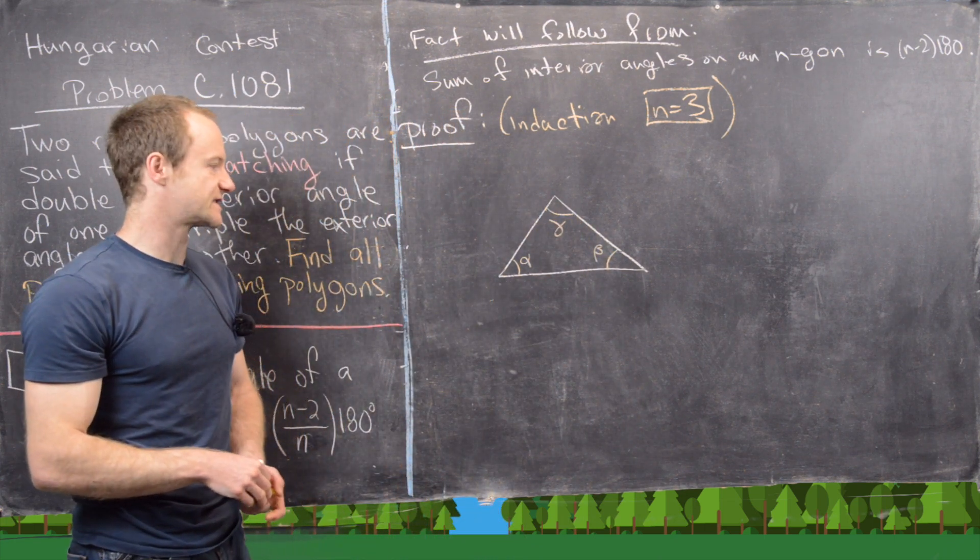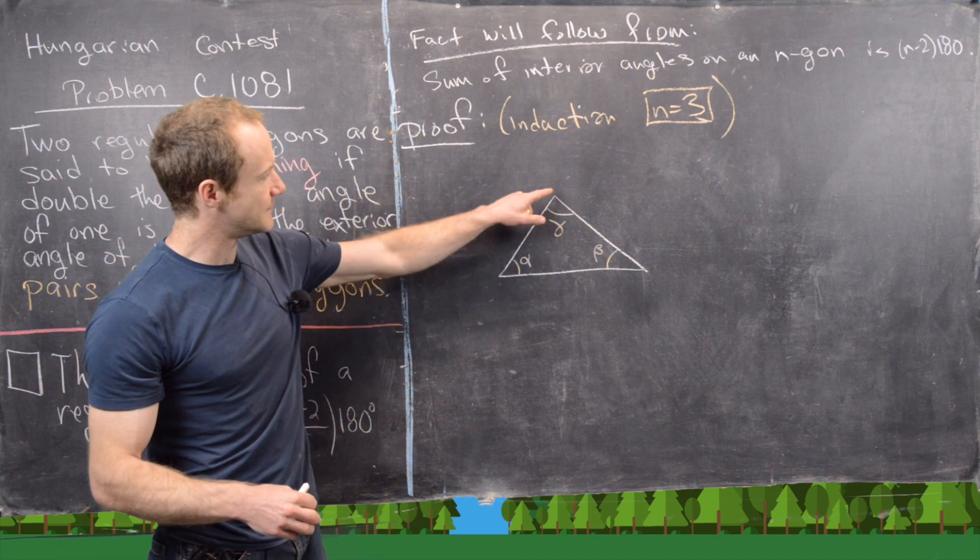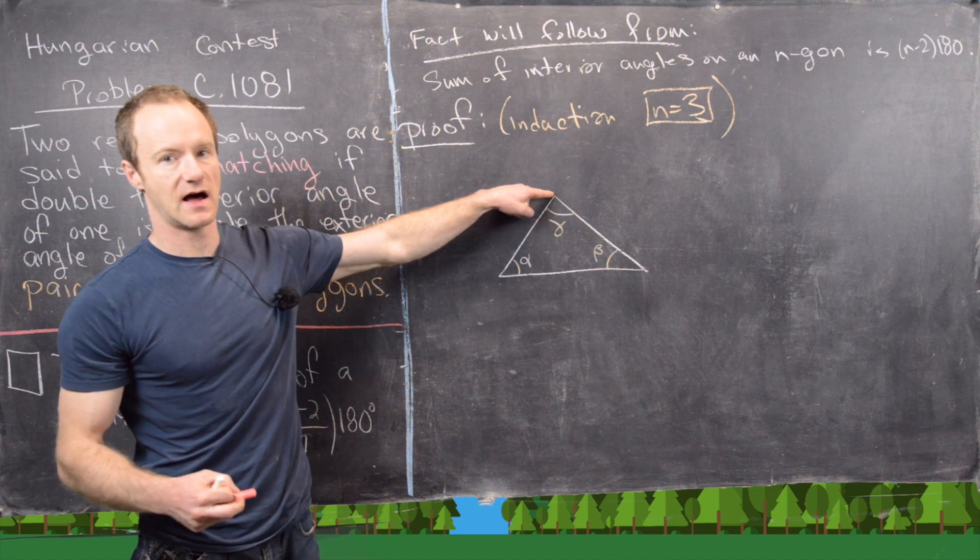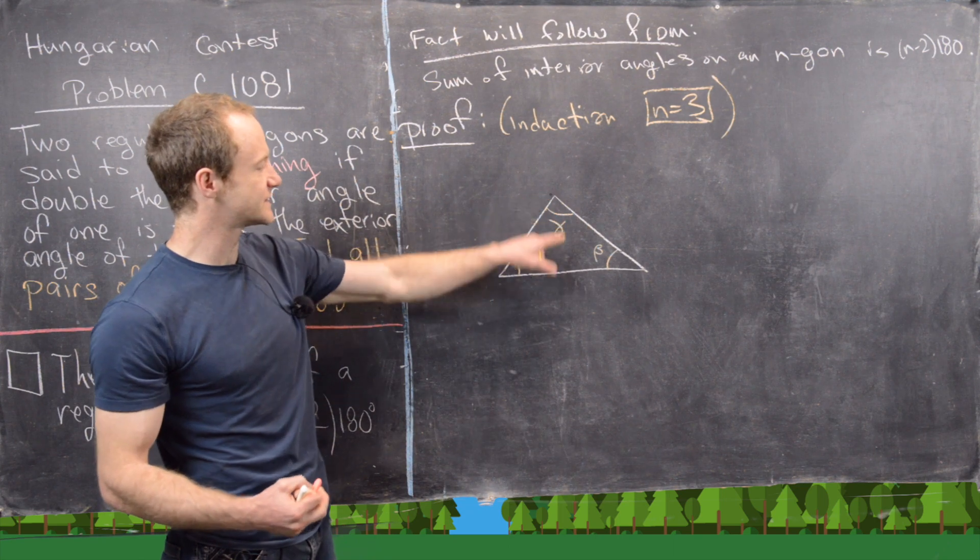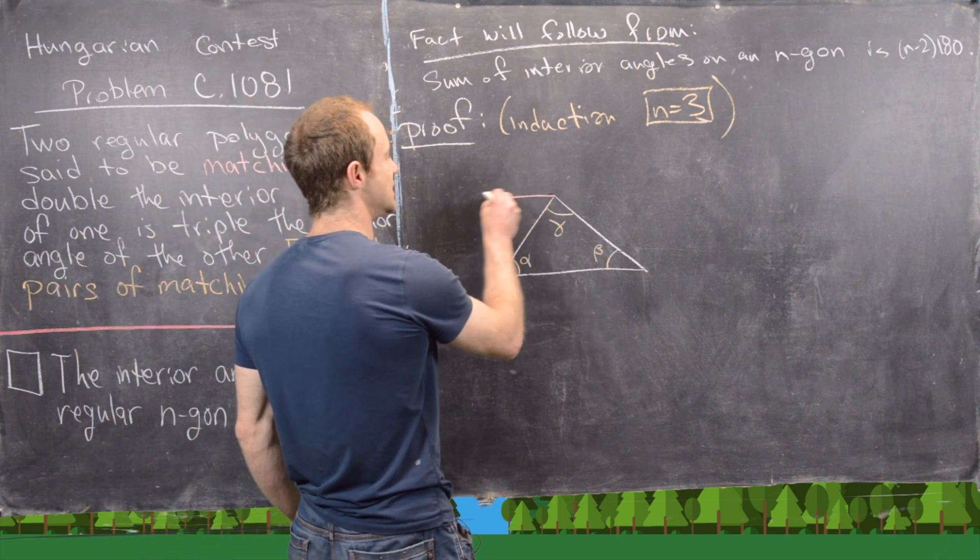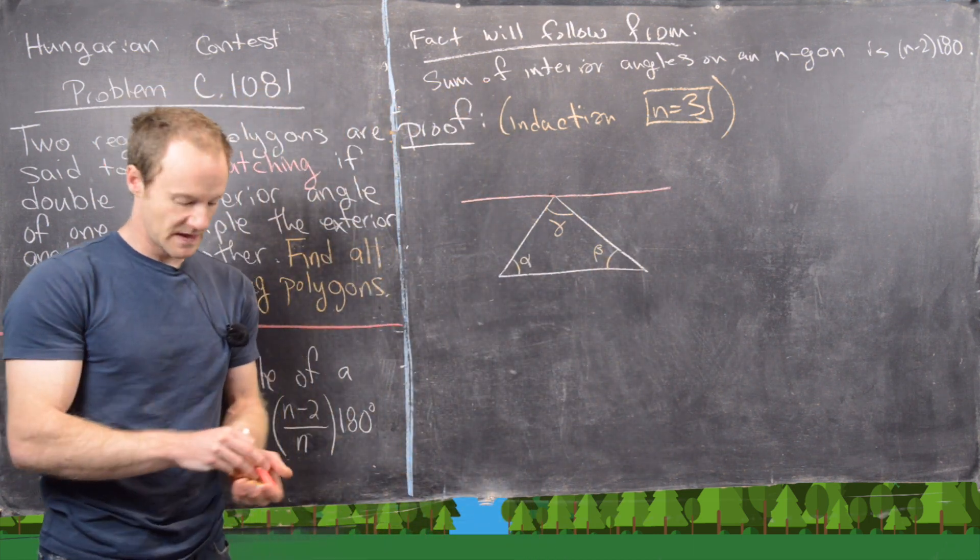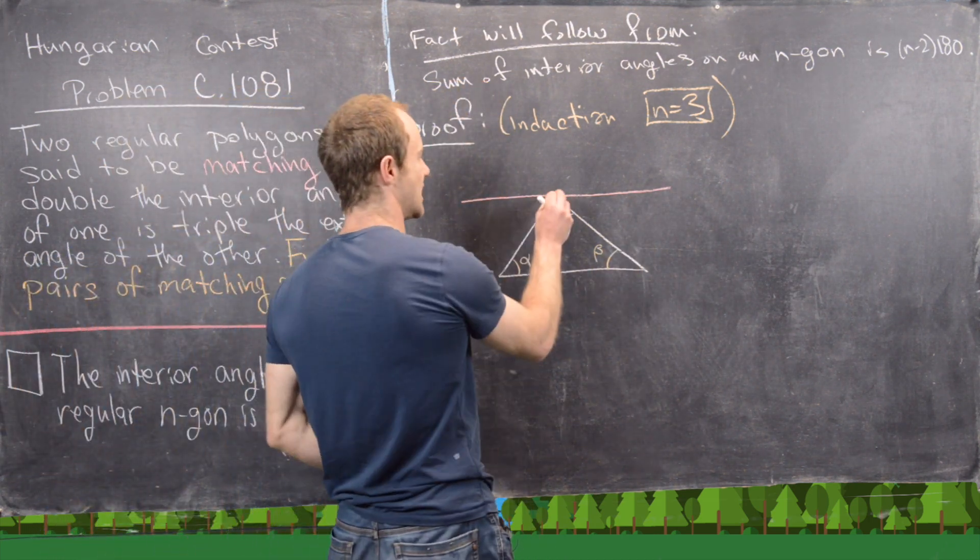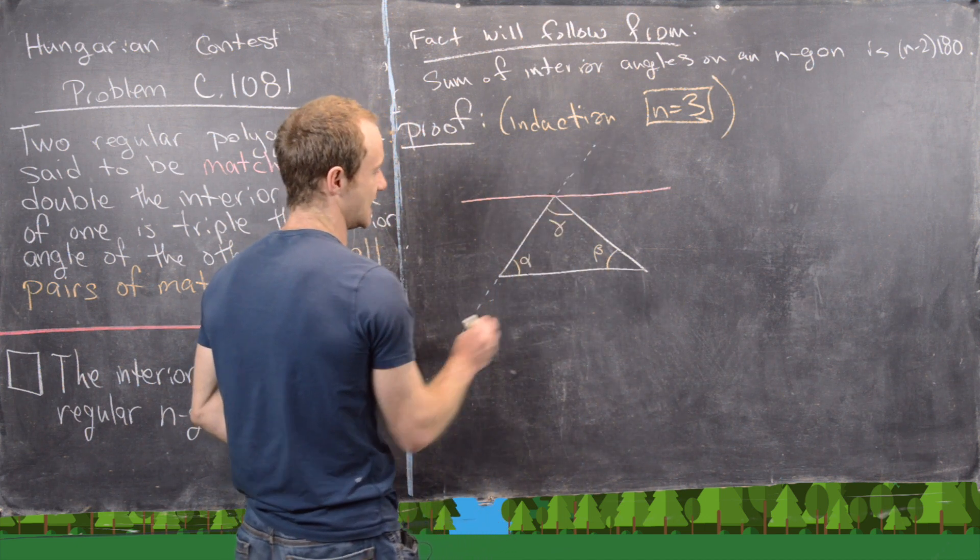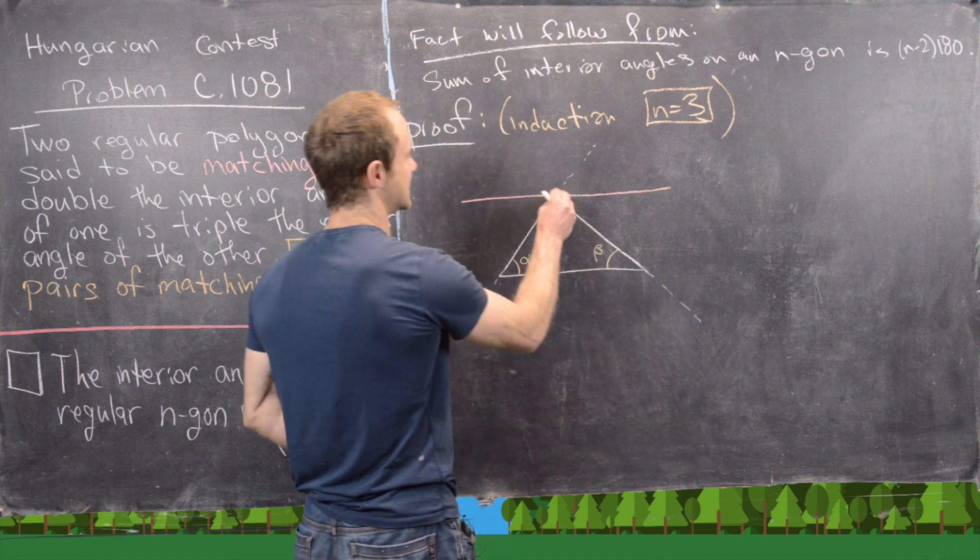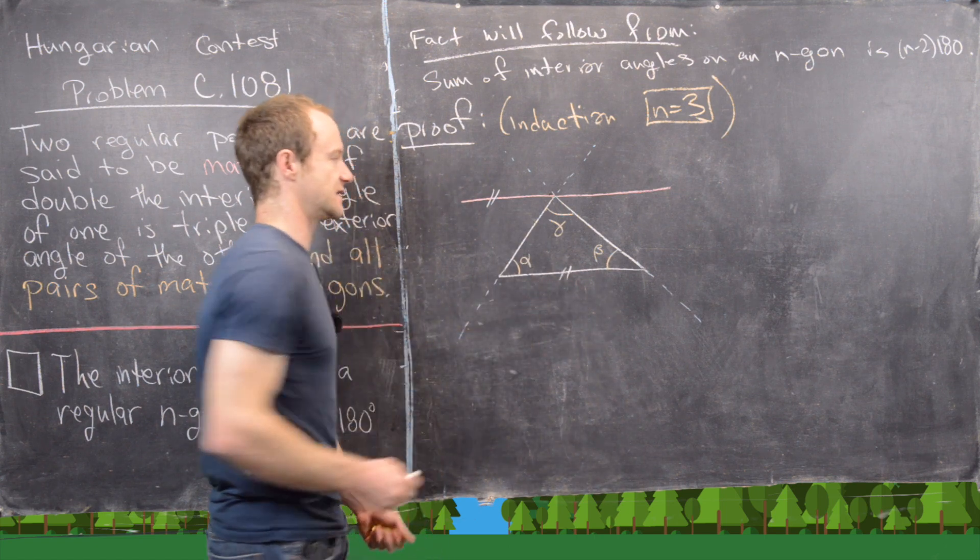The first important step is to use the fact that any line and any point not in that line can be used to create a unique parallel line through this point that's parallel to this. So let's go ahead and use that to create this parallel line. And then let's extend these sides of the triangle into line segments.